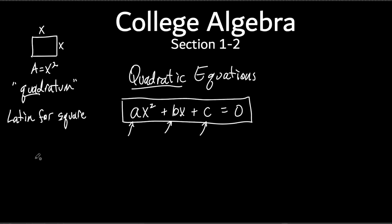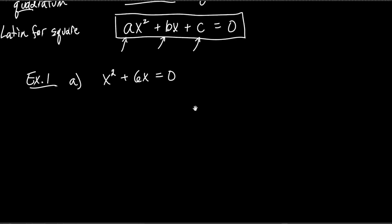Let's do a couple examples. Example one, part A: x squared plus 6x equals 0. First of all, is this a quadratic equation? Does this look like ax squared plus bx plus c equals zero? It does — there's an x squared, there's a something x, there's an equals, and there's a zero. So it definitely resembles a quadratic equation. What if I asked you to tell me what a, b, and c were in this equation?